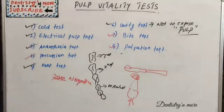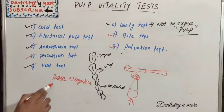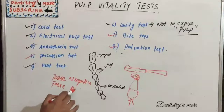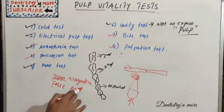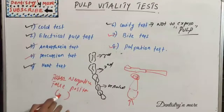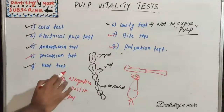Sometimes the test results show the tooth is vital but it might actually be non-vital — that is known as a false positive result. To clarify: a false positive means the test says the tooth is vital, but it is actually non-vital; a false negative means the test says non-vital, but the tooth is actually vital.